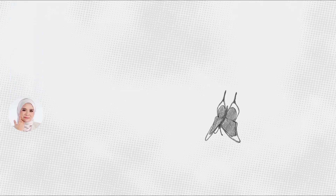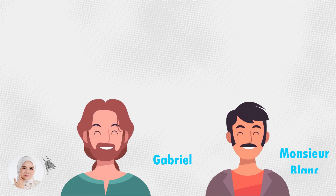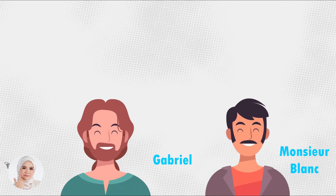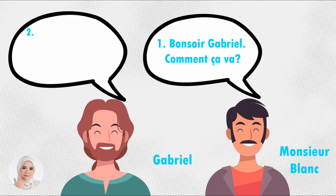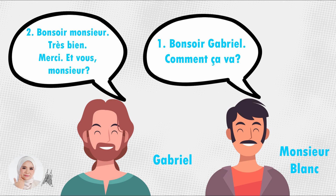Let's look at the third conversation between Gabriel and Monsieur Blanc. This one is a formal situation. Monsieur Blanc says, 'Bonsoir, Gabriel. Comment ça va?' Gabriel replies, 'Bonsoir, Monsieur. Très bien. Merci. Et vous, Monsieur?'